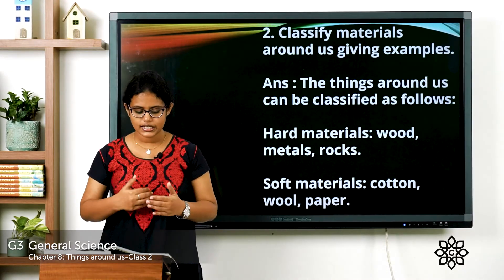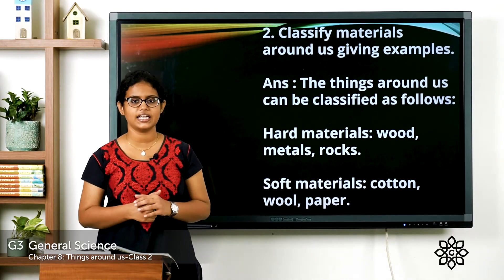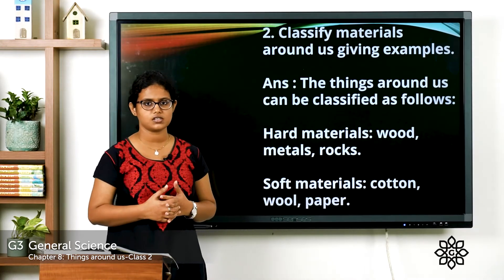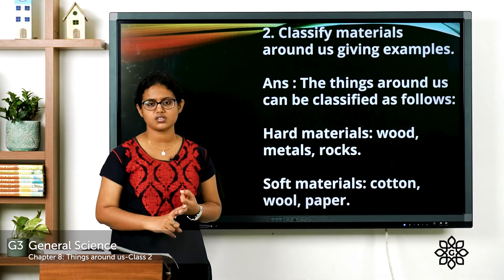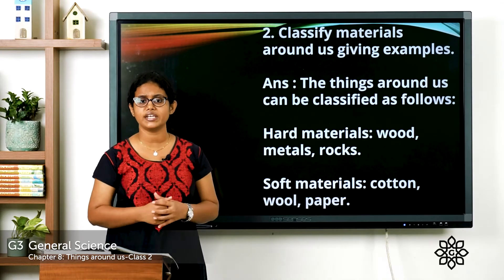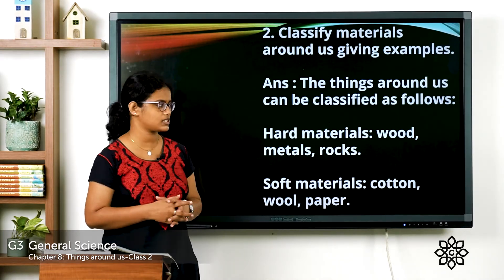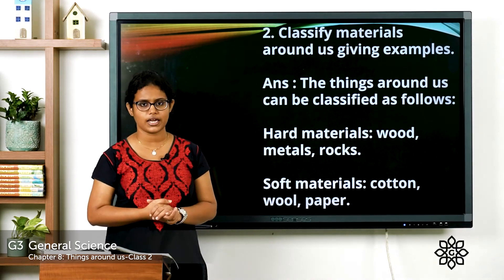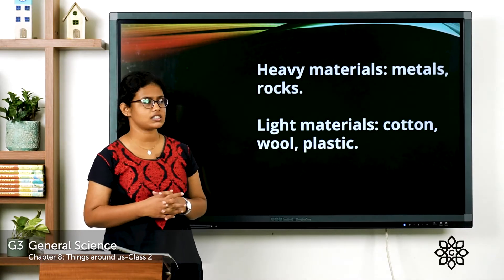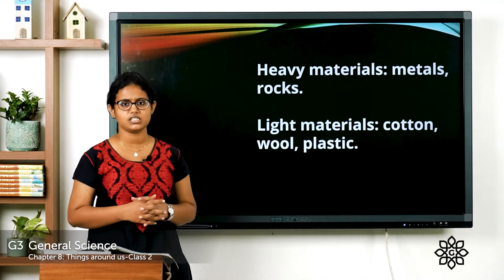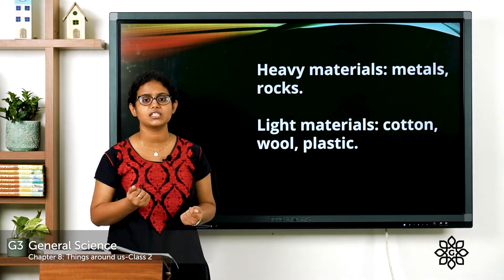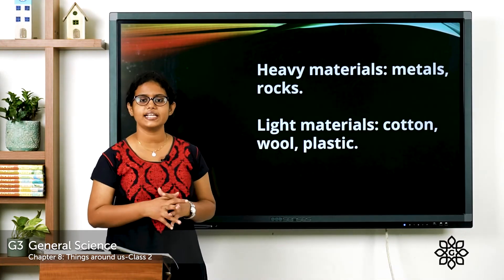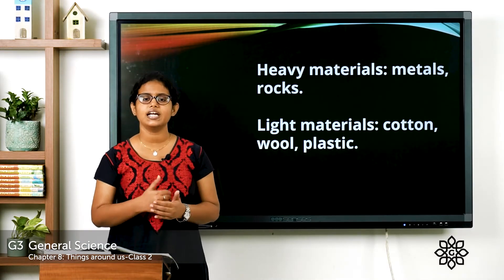Question two — classify the materials around us giving examples. Things around us can be classified as: hard materials — examples: wood, metals, rocks (very firm and strong); soft materials — examples: cotton, wool, paper (easily cut or scratched); heavy materials — examples: metals, rocks (hard to lift, more weight); light materials — examples: cotton, wool, plastic (easy to carry, less weight).